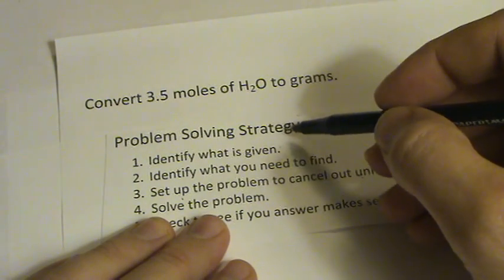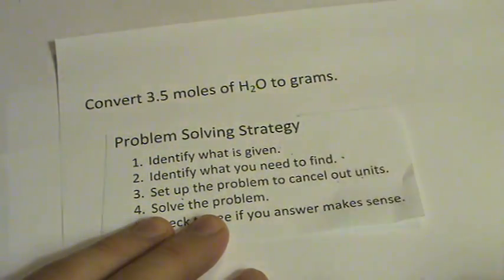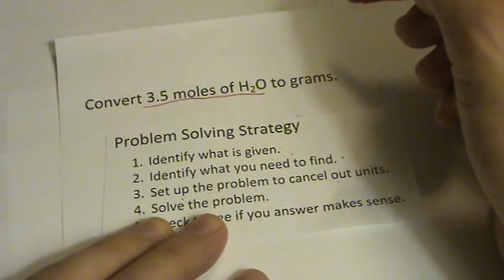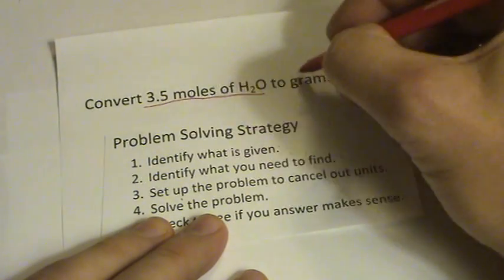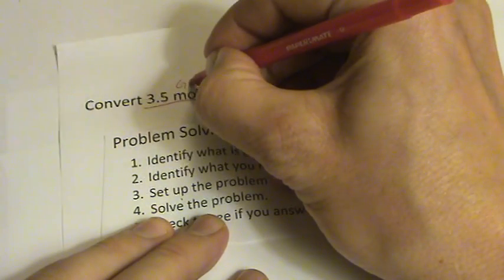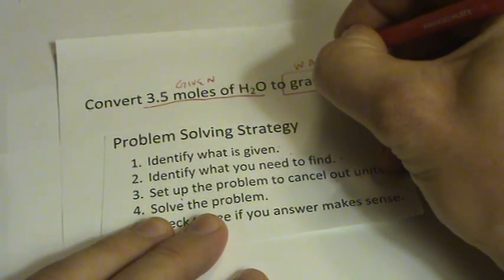What I want to do is identify what's given in the problem, and then identify what I'm trying to find. So I'm given moles of water, and I want to convert that to grams. So this is the given, and this is really what I want to end up with.